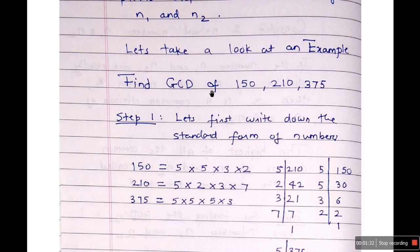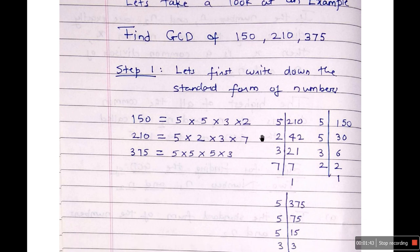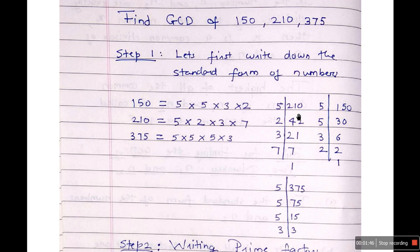Step one. The problem is: find GCD of 150, 210, and 375. We'll write down the standard form of all these numbers. Standard form of 210: divide 210 by 5, you get 42; divide 42 by 2, you get 21; divide 21 by 3, you get 7; divide 7 by 7, you get 1. So the standard form of 210 is 5 × 2 × 3 × 7.